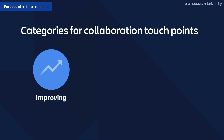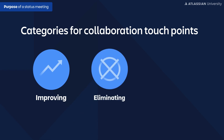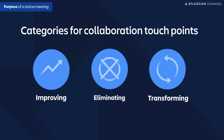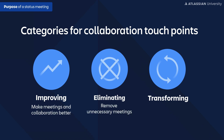When we look at collaboration touchpoints — things like meetings and other interaction events — we typically group them in three areas: improve, eliminate, or transform. We're either going to look at a meeting and say let's improve it, get rid of it, or turn it into something that can add more value.